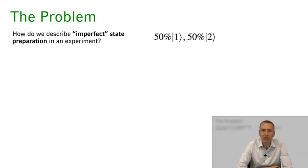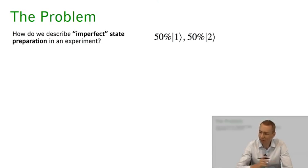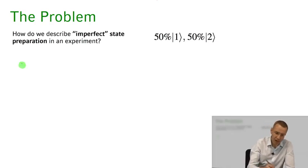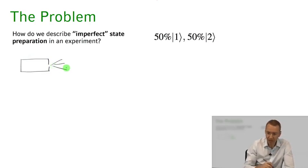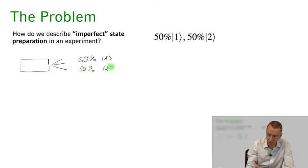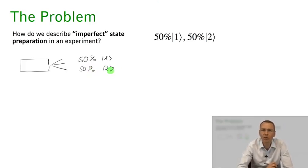So what's the problem that we're trying to address here? Imagine that me as an experimentalist I'm trying to do the best I can to produce a perfect source for my two-level atom states, but let's say I'm just not succeeding. We have a source that spits out atoms and I can only prepare 50% of the atoms in state one and 50% in state two.